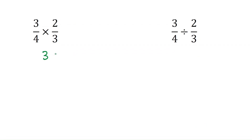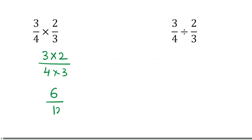For multiplication, we simply multiply both numerators and both denominators: 3×2 = 6 over 4×3 = 12, giving 6/12 as the answer.